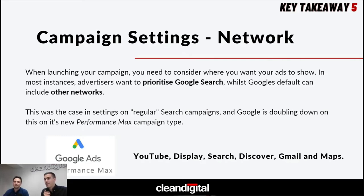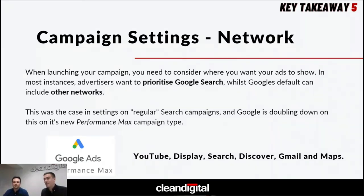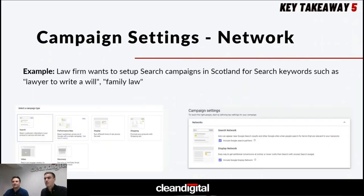Performance Max is coming — Google is really doubling down on leveraging machine learning, taking asset groups and creating a campaign across all touch points. That campaign type has merits, but a lot of this presentation is focused on existing search campaigns where you can make sure you're not wasting budget. An example: a law firm wants to set up a search campaign in Scotland for keywords like 'lawyer' or 'family law.' They want customers who are searching those keywords to click their ad, come to their website, and hopefully fill a lead form or call them.